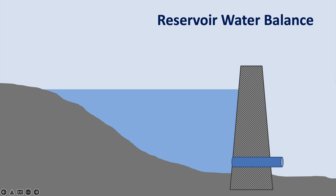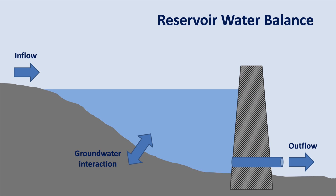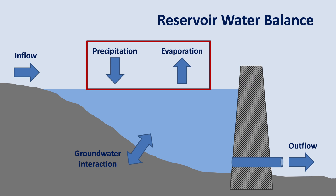Before we begin, a quick reminder of the key water balance components of a reservoir. The water balance of a reservoir is mostly controlled by the amount of water entering through inflows and leaving through outflows. There may also be some interaction with the local groundwater if permeable rocks are in contact with the reservoir. In today's video, we'll be estimating how much water is lost due to evaporation from the reservoir surface to the atmosphere.